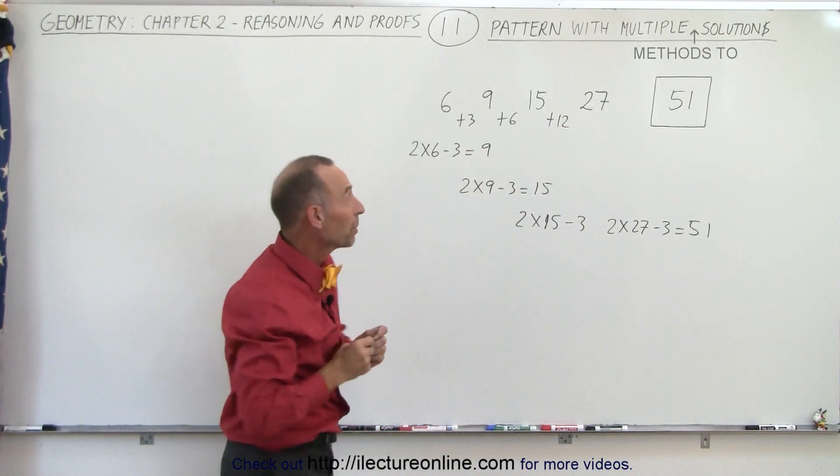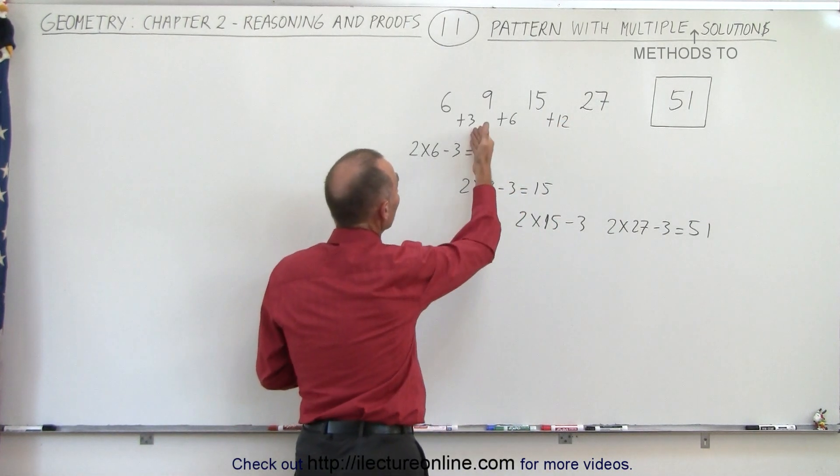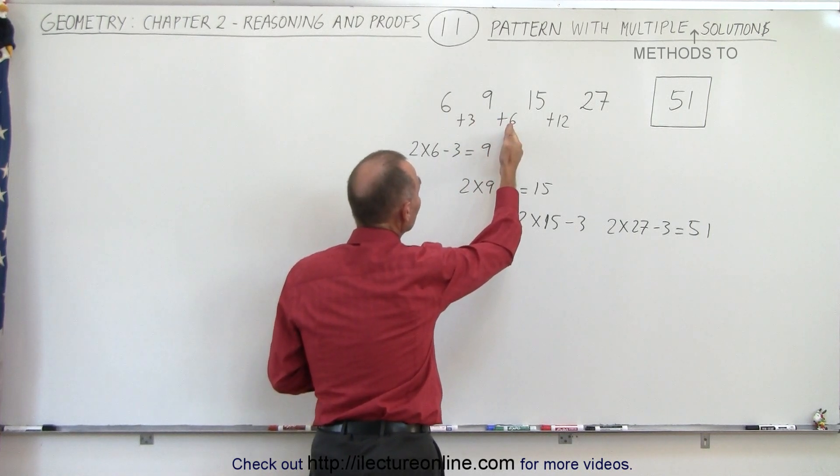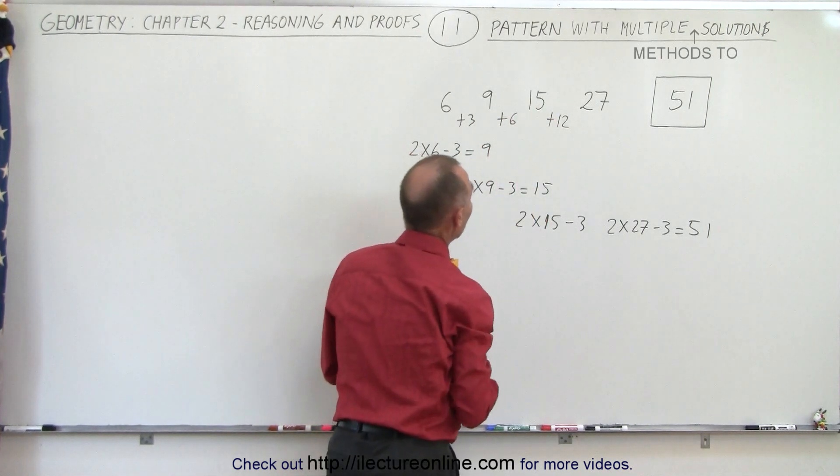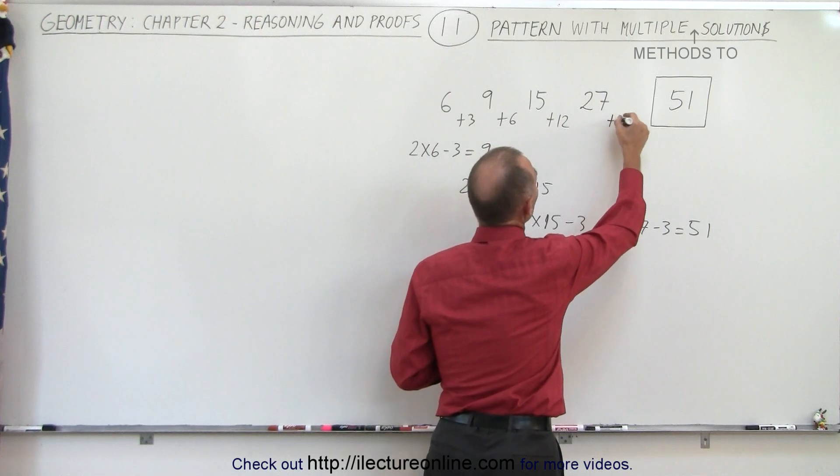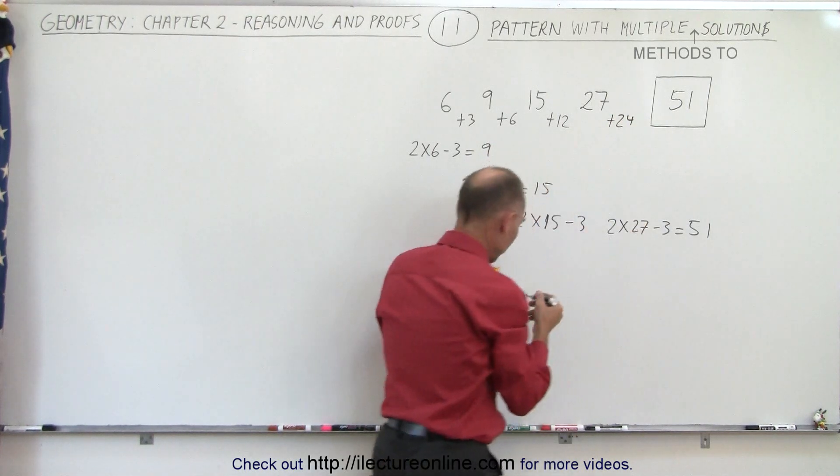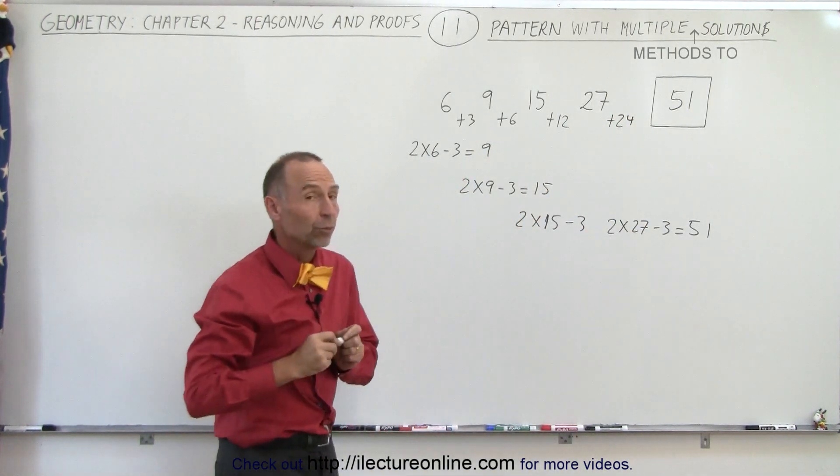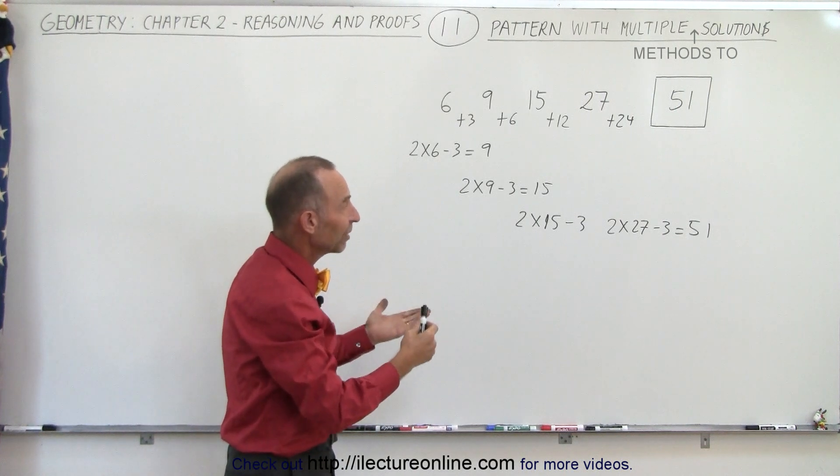So notice that the pattern also appears that each time I add a number, I double what I add from the previous time. Which means that 12 doubled is 24. If I add 24 to 27, I also get 51.